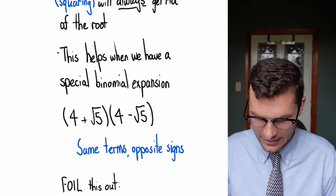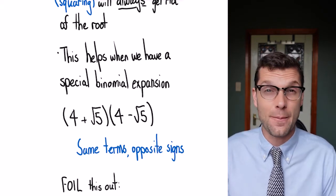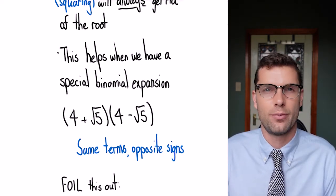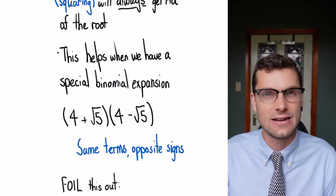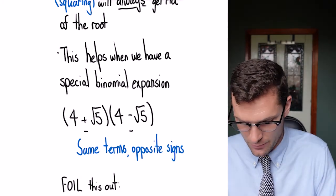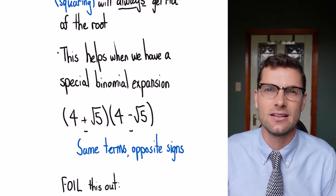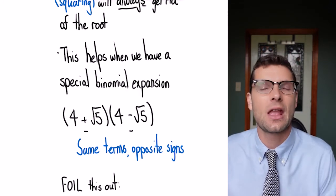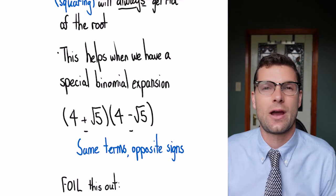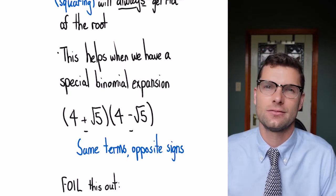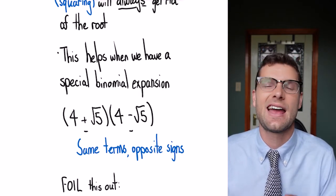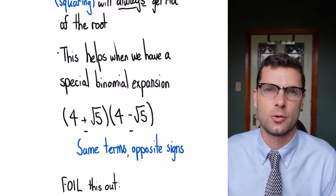If you have a look at this one here, they're the exact same numbers in both brackets. The only thing that's different is the sign in the middle - we've got a plus in the first one and a minus in the second. These difference of two squares always occur when we've got the same terms and the opposite sign in between them.